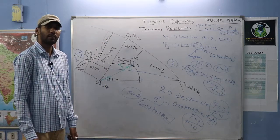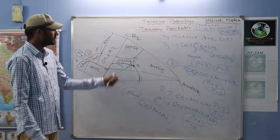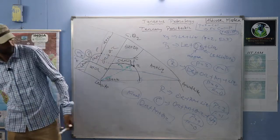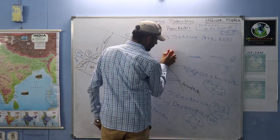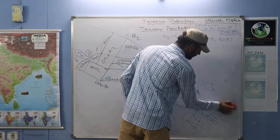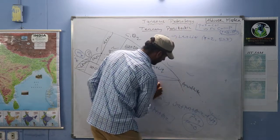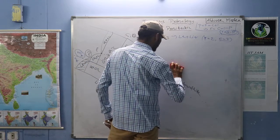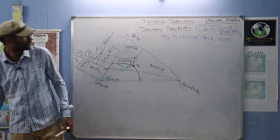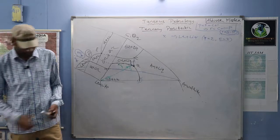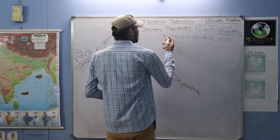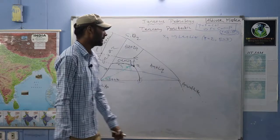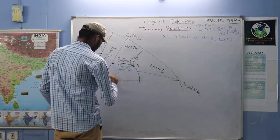Let us imagine that before reaction point R is reached, all the leucite is consumed. All leucite is finished from the system. At point P5, the remaining phases are orthoclase plus liquid. Why? Because all the leucite that crystallized is directly getting converted to orthoclase — so no free leucite remains. Number of phases becomes two, degree of freedom becomes two.